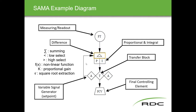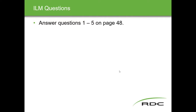Additional SAMA block options include selecting, transfer blocks, variable signal generators — this is a continuous signal — and final control element transfer blocks. Those are all comparable to ISA diagram elements.